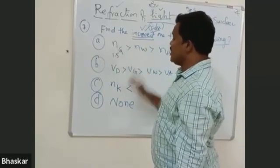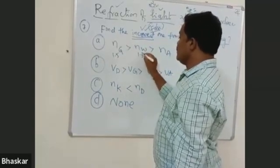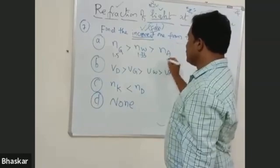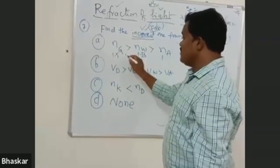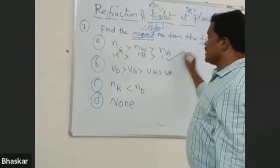Refractive index of glass is 1.5. Refractive index of water is 1.3. Refractive index of air is 1. So, 1.5 is more than 1.3 is more than 1.